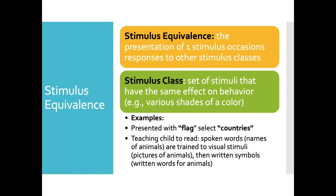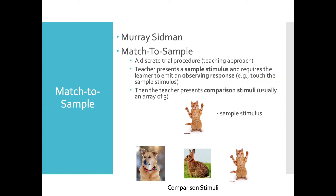We can get into more complex academic material, like teaching children to read sight words, or teaching them to respond to spoken words in particular ways — teaching them that pictures of animals equal the word 'animal' or equal the verbal response 'animal.' As you go through the chapter, you'll see that some of the research has started to address some more complex behavior.